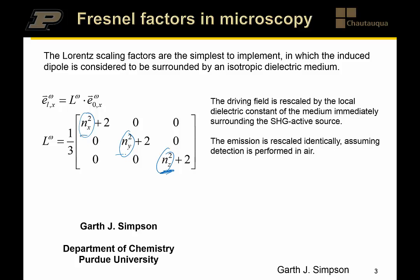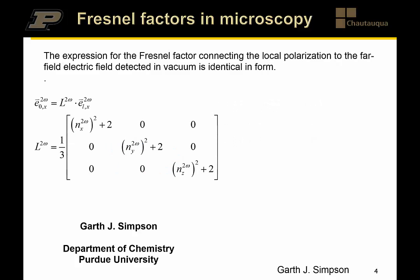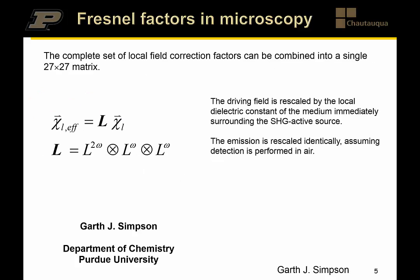That would be one way to account for it in this model. So if you have generated a signal in the local frame and want to consider what it's going to look like in the laboratory frame and vacuum, it's an exactly identical functional form for the local field correction factor — again, just the refractive index squared that dictates that scaling factor. To integrate this into the linear algebra architecture we've built up, we can introduce a matrix L. Both of these are the full 27-by-27 sets of local frame tensor elements.